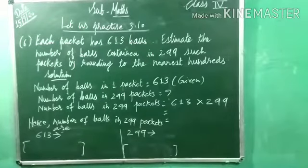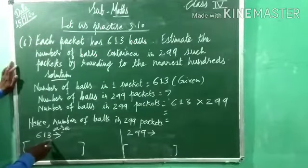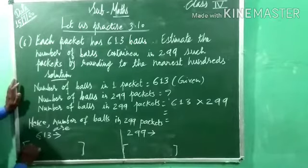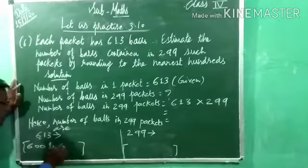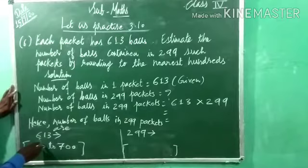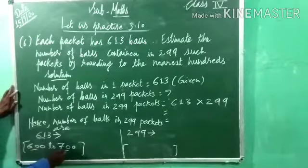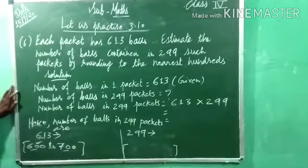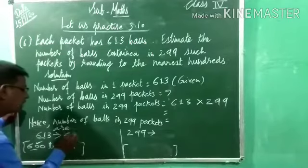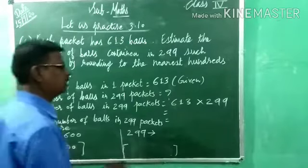Round 613 to the nearest hundred: the place value of 100 is 1 times 100, so 6 and place zeros for 1 and 3 — giving 600. Then 600 plus 100 is 700. Looking at 61 — it gets nearer to 60 only, so 613 gets nearer to 600. Write 600 here.